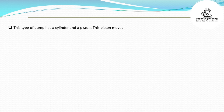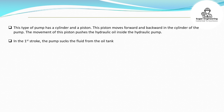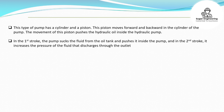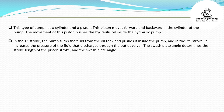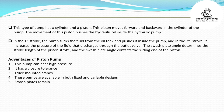This type of pump has a cylinder and a piston. This piston moves forward and backward in the cylinder of the pump. The movement of this piston pushes the hydraulic oil inside the hydraulic pump. In the first stroke, the pump sucks the fluid from the oil tank and pushes it inside the pump, and in the second stroke, it increases the pressure of the fluid that discharges through the outlet valve. The swash plate angle determines the stroke length of the piston and contacts the sliding end of the piston.